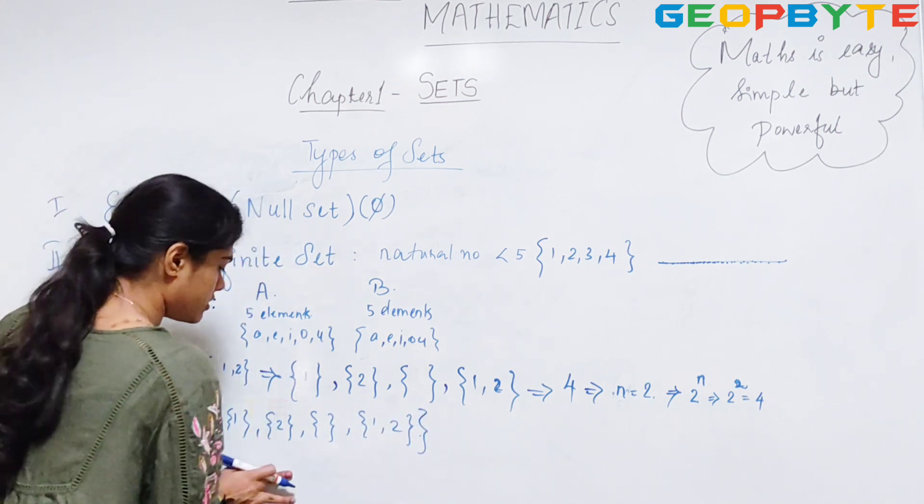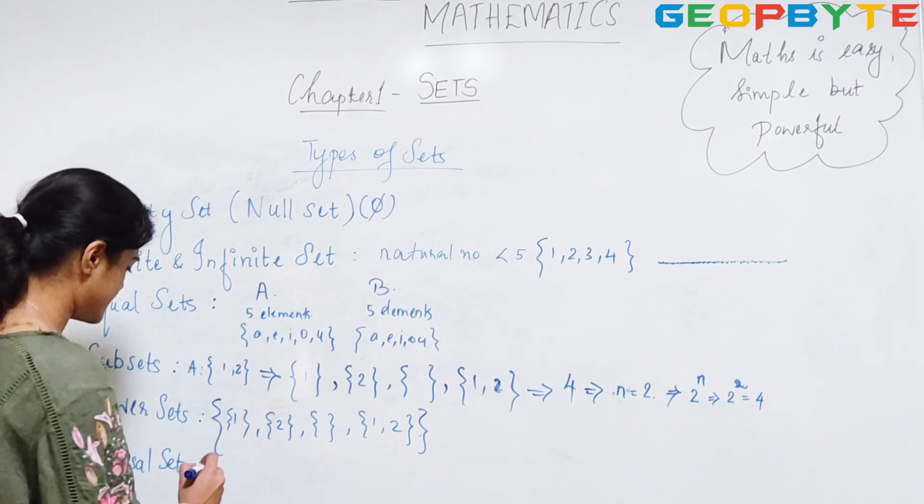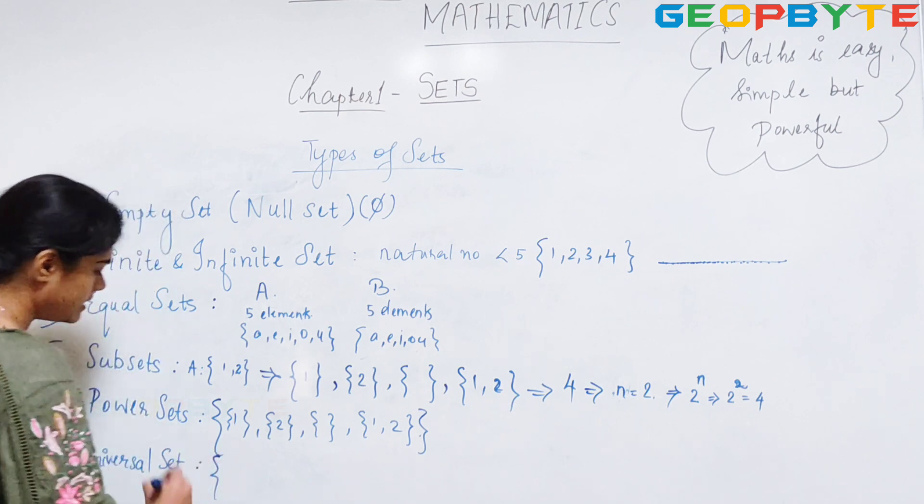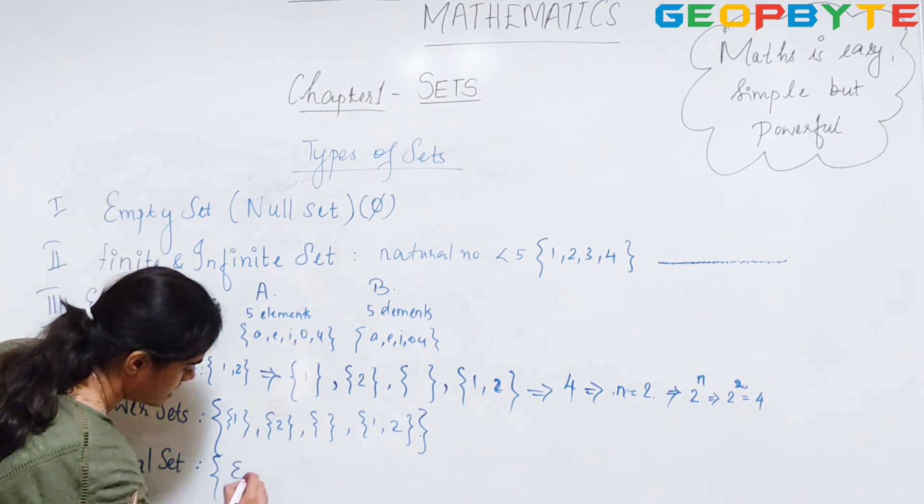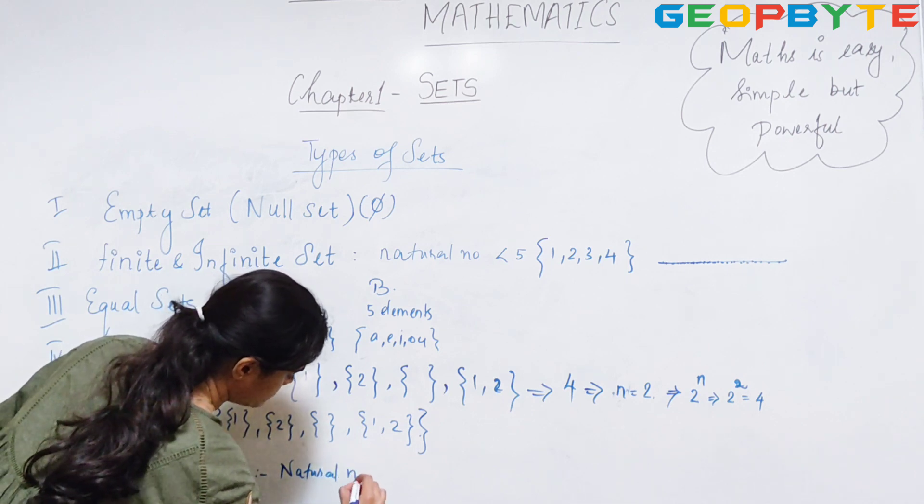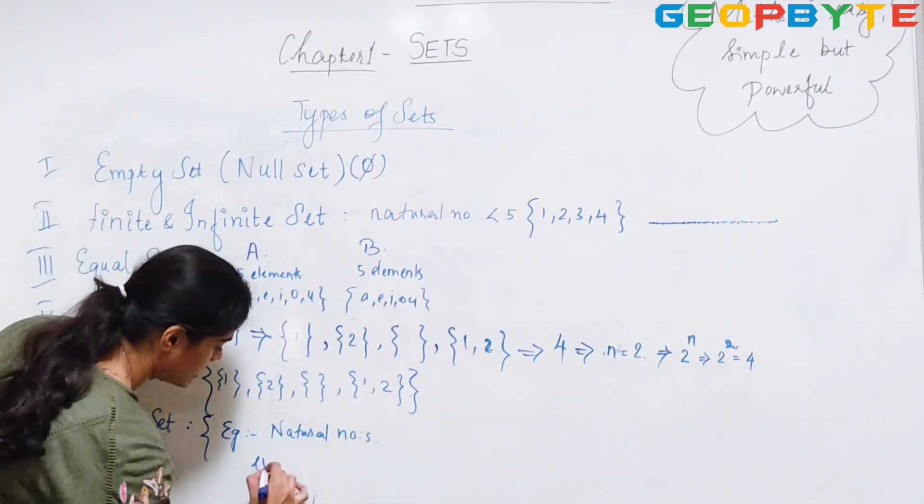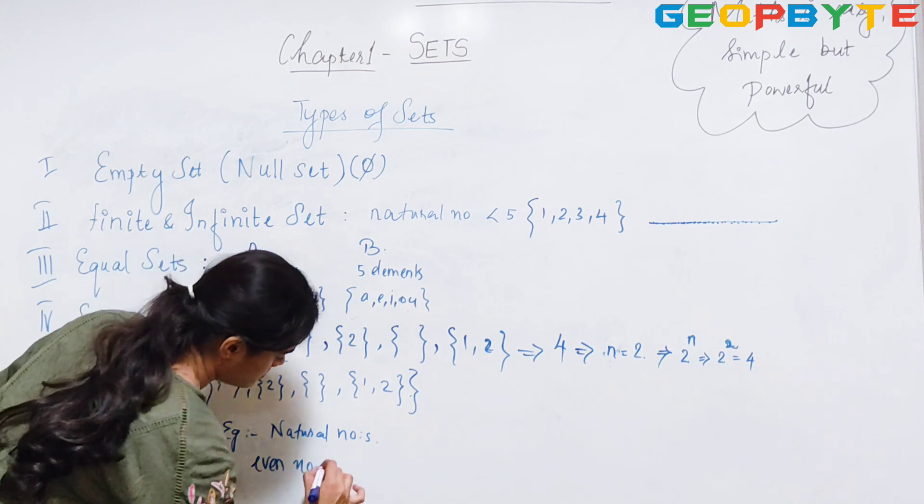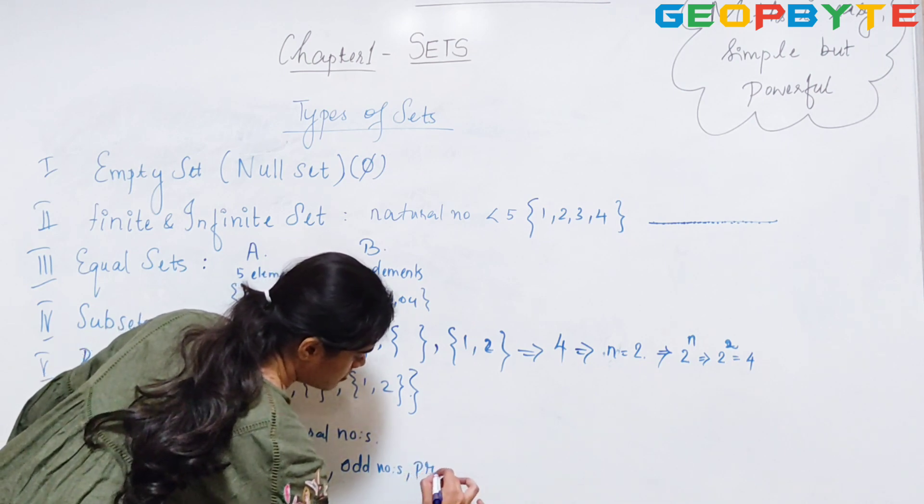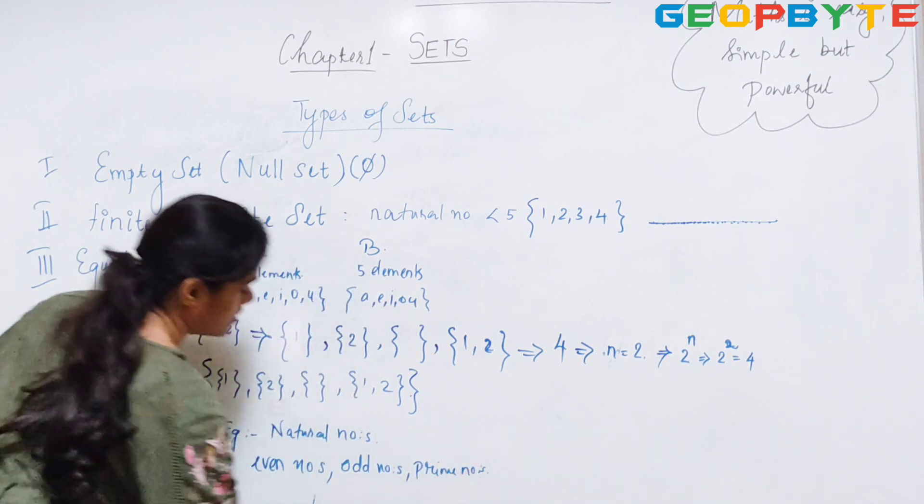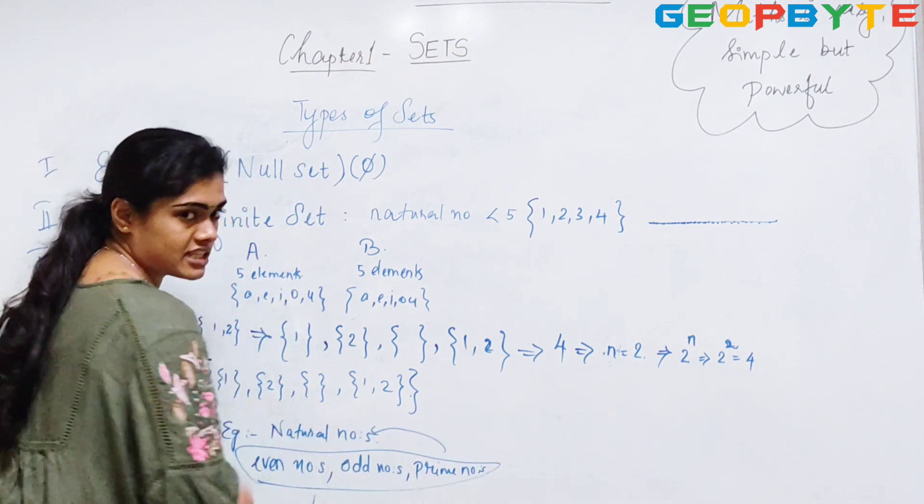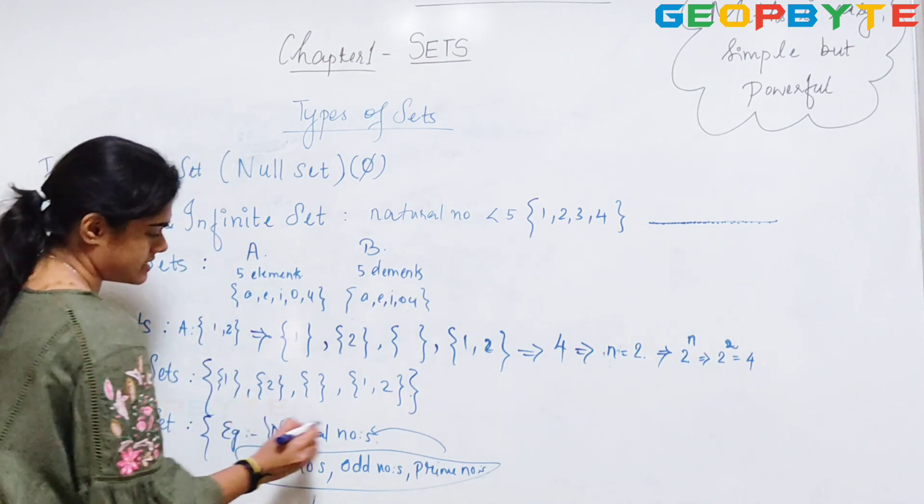What is a universal set? My universal set can be defined as, for example, natural numbers, where even numbers, odd numbers, and prime numbers are the subsets. And these 3 belong to the main category of natural numbers. Then this is my universal set.